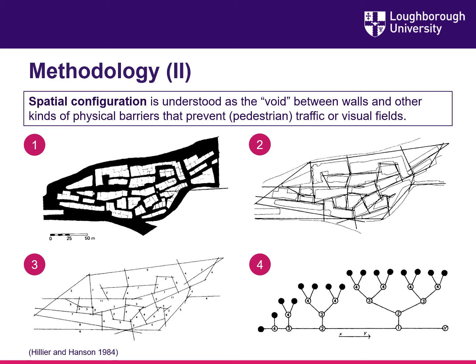Spatial configuration is understood as the void between walls and other kinds of physical barriers that prevent traffic or visual fields. Core to analyzing spatial configuration is the so-called axial map. Figure 1 depicts the figure ground diagram of a French village used by Hillier and Hansen as a case study in their groundbreaking book The Social Logic of Space. In Figure 2 you see how axial lines are created by passing through all the unbuilt spaces, which are black in Figure 1. A set of axial lines forms the axial map, which you can see in Figure 3.